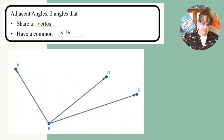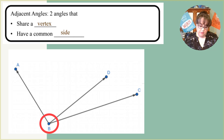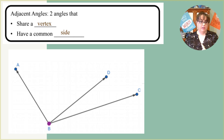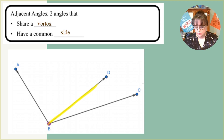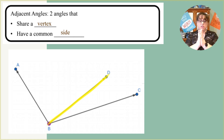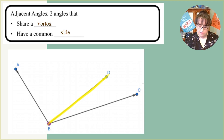In this example, they have a common vertex — that means where they come together — and you can see that at point B right here. The common side they share is where they start with the common vertex and go out to point D. That is the common side where they both touch. Because they share a common vertex, they are both called angle B.